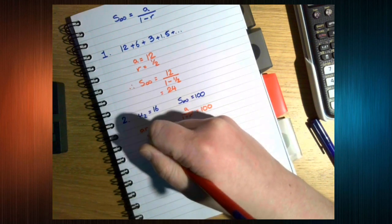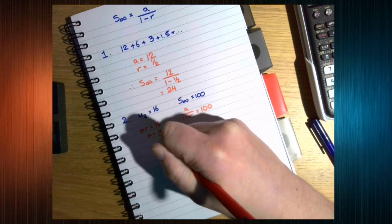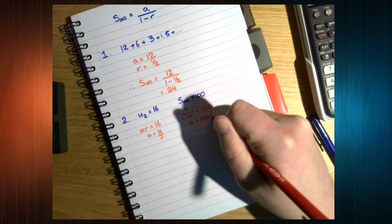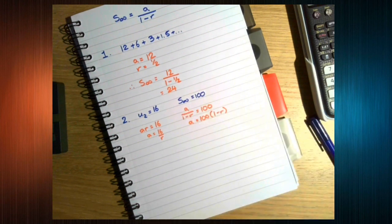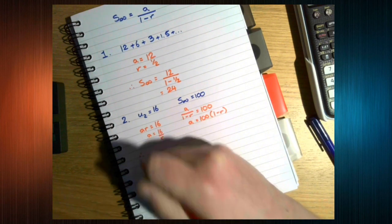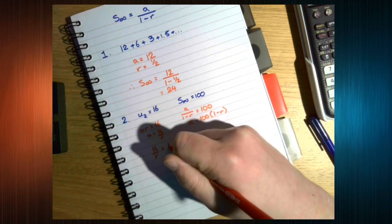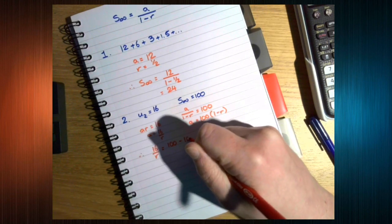So, we know that a is 16 over r, and a is 100 times 1 minus r. Solving these equations simultaneously, we get 16 over r equals 100 minus 100r.